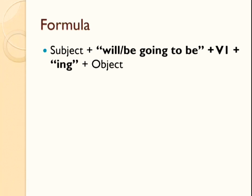Once again: S plus will or be going to plus be form plus V1 plus -ing plus object. In my earlier videos I have talked about the different verb forms — V1, V2, V3. V1 is the base verb, V2 is the past tense of the base verb, and V3 is the past participle. Depending on the situation, you use these verb forms. By now, I assume this formula is clear to you and I hope you have remembered it.